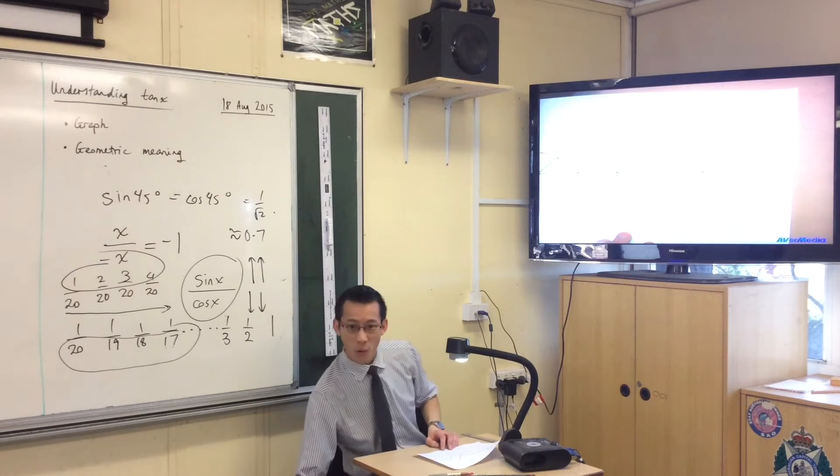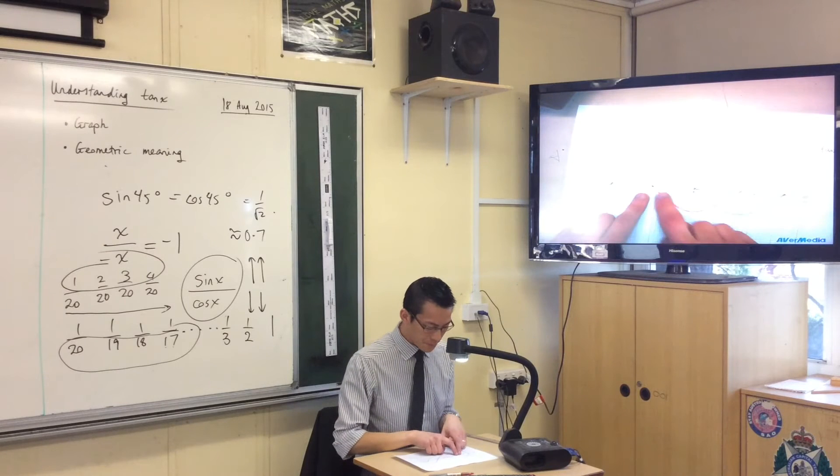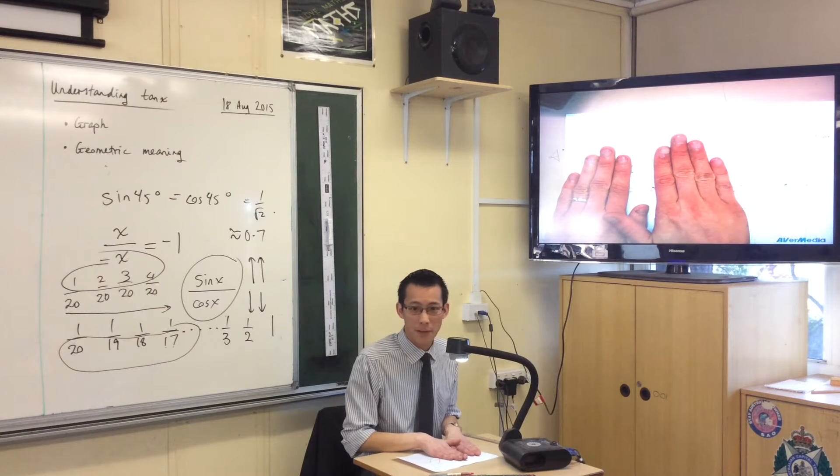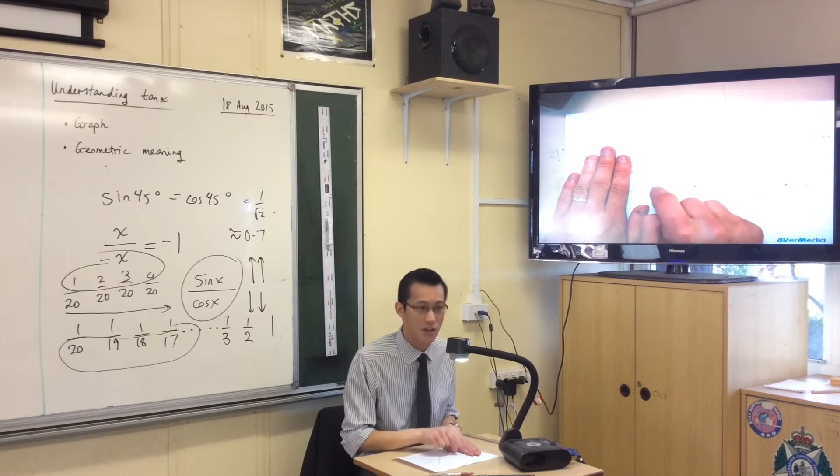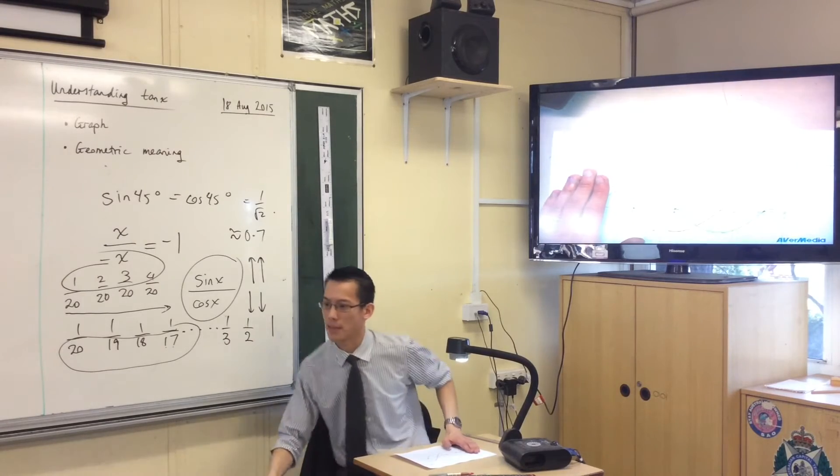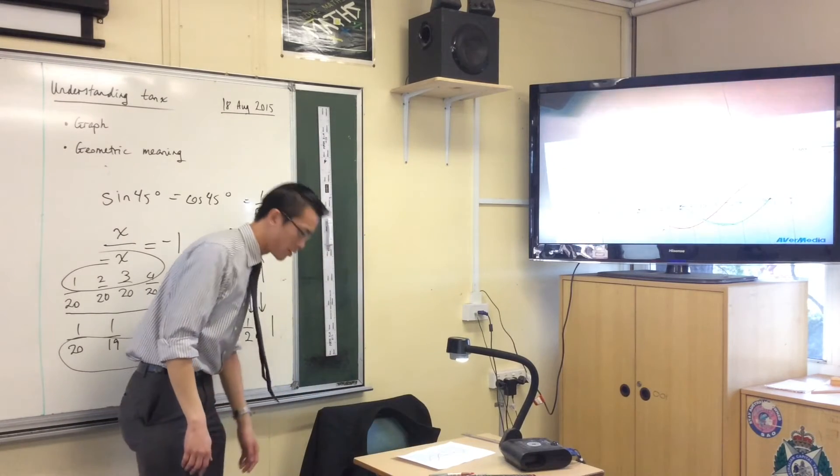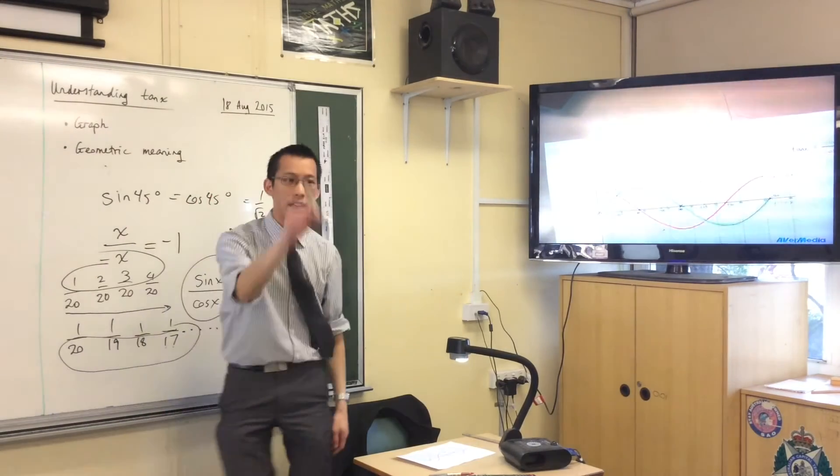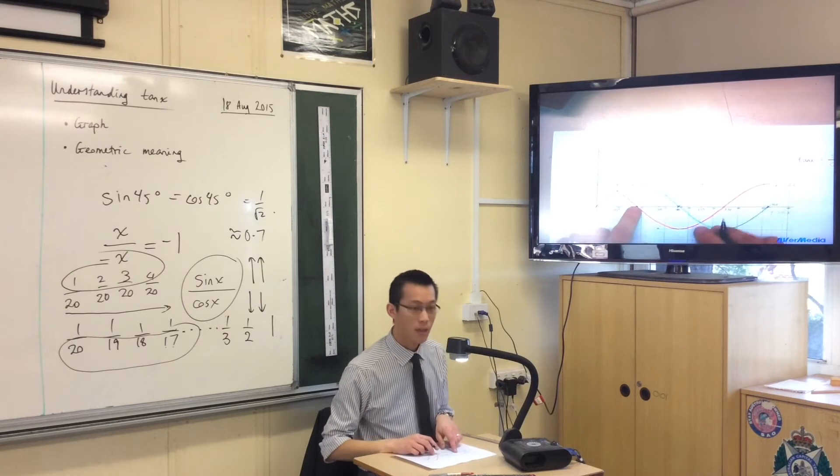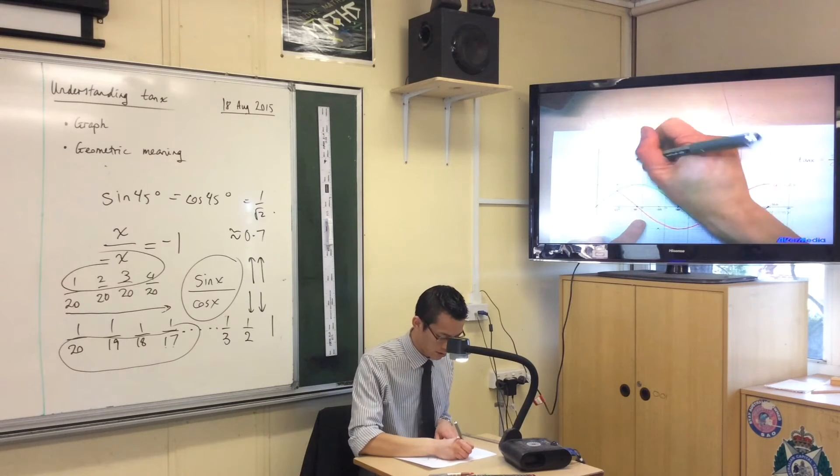So all that means is for us, our graph - remember from this little section we were just looking at that section in there - it gets bigger and bigger and bigger and bigger, but it can never actually go to 90 degrees. So I want us to indicate that by drawing a vertical dotted line through 90 degrees. It's going to look like this.